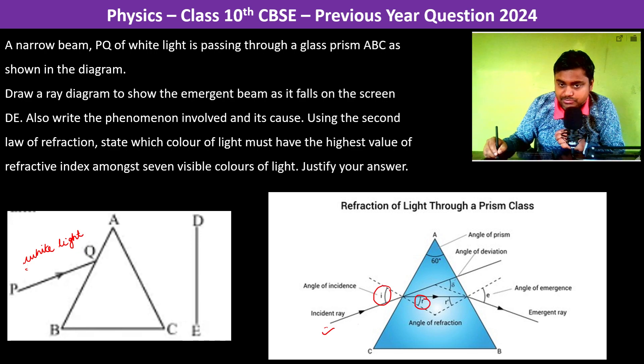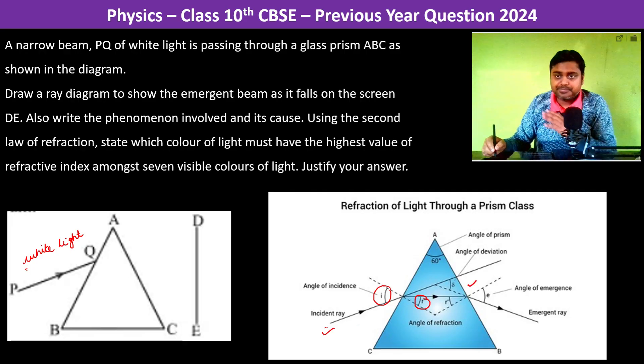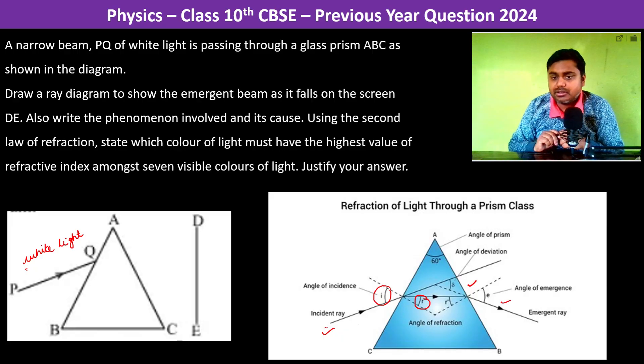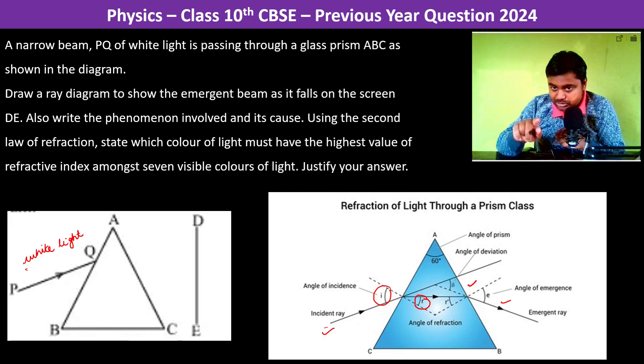This is the angle of refraction after it gets refracted from here, and then after that it again gets refracted from the second side and it comes out as emergent ray. However, this diagram is not going to work and this diagram is not correct.